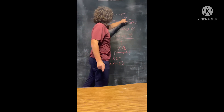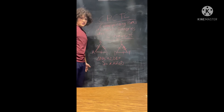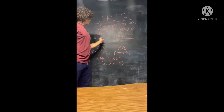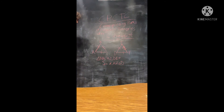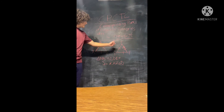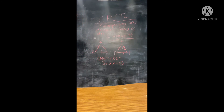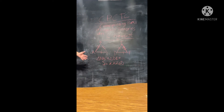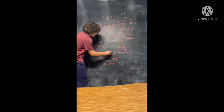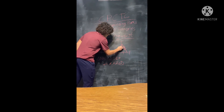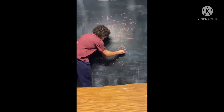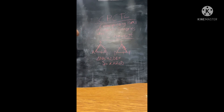C-P-C-T-C, which means corresponding parts of congruent triangles are congruent. This is very useful: if triangle A-B-C and triangle D-E-F are proved congruent — for example by the SSS postulate — and all corresponding sides are congruent, then we know that angle A is congruent to angle D, angle B is congruent to angle E, and angle C is congruent to angle F, because of C-P-C-T-C.